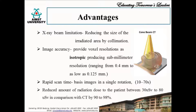Rapid scan time: because CBCT acquires all basis images in a single rotation, scan time is rapid, i.e. 10 to 70 seconds, and hence motion artifacts due to subject movement are reduced. Dose reduction: published reports indicate that the effective dose of radiation is significantly reduced, up to 98%, compared to conventional fan-beam computed tomography systems. This makes it a significant advantage over CT.